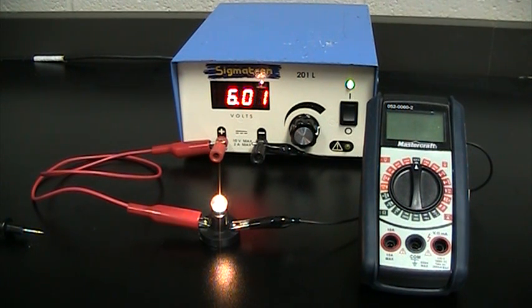Because electricity happens so quickly and is hiding inside these wires and so small we can't see it, we need to enlist the help of a digital multimeter to give us a hint as to what's going on inside our circuit.